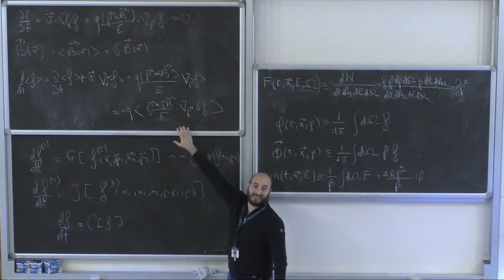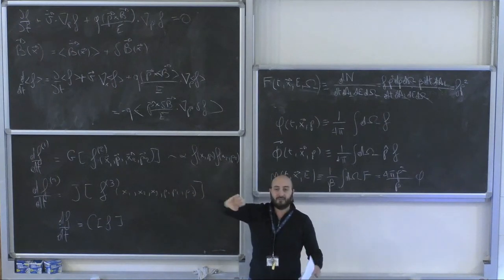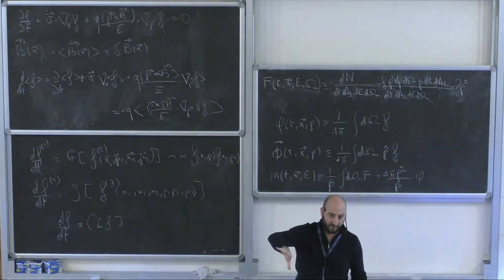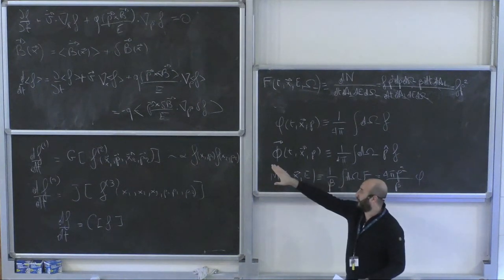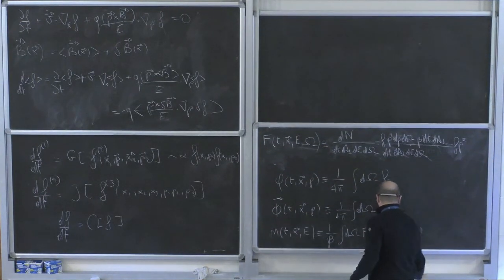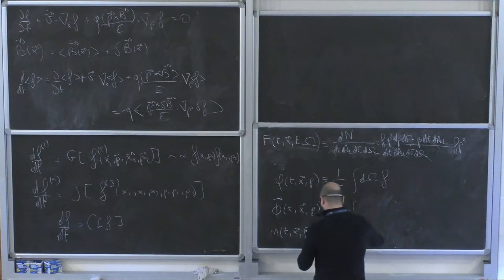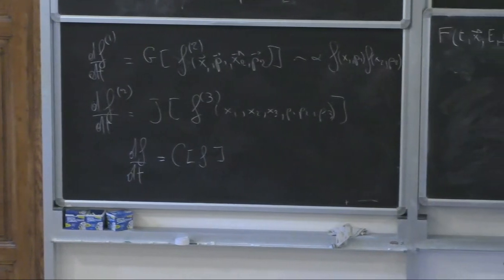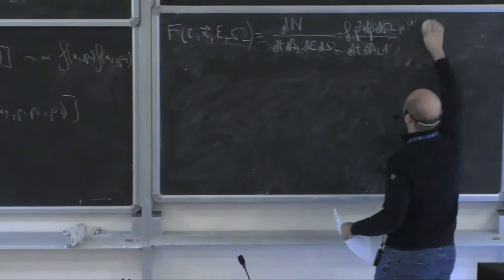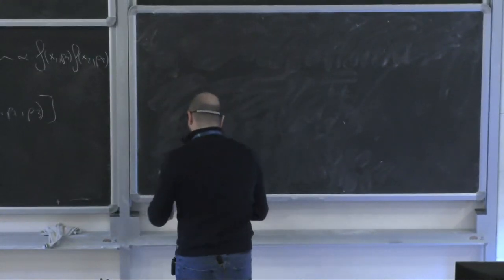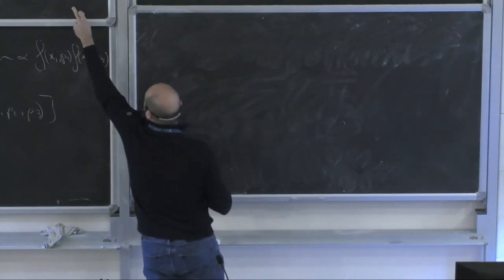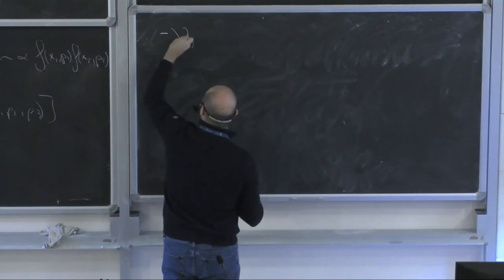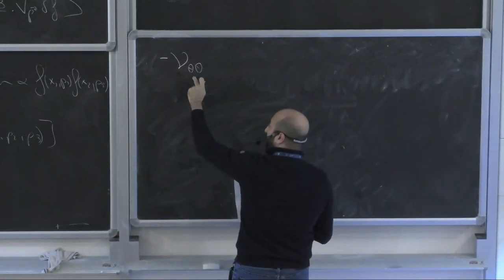We don't know an exact expression of the right-hand side term, so we resort to approximations. Which approximation we use determines which theory incarnation we work within. The simplest thing we can write is the BJK ansatz: the collisional term equals −ν_{θθ}(⟨f⟩ − φ), where ν_{θθ} is the frequency of scattering of the angle estimated previously — of order ω·(δB/B₀)² at the resonance point, with ω being the relativistic gyrofrequency.